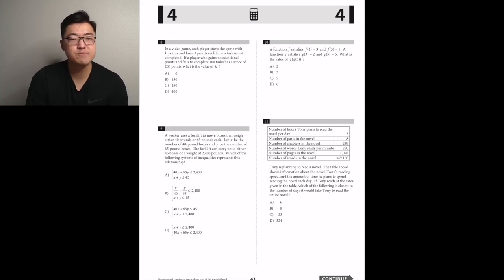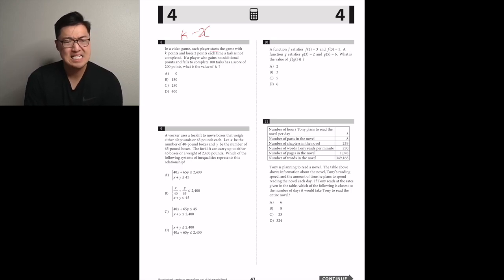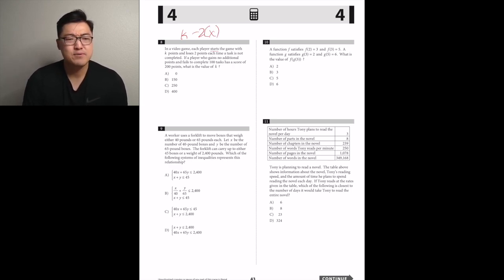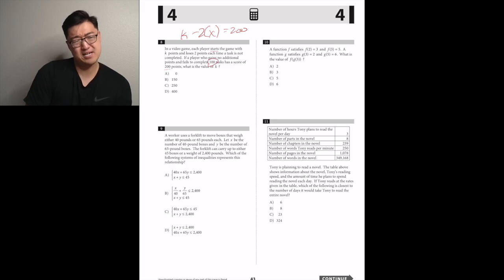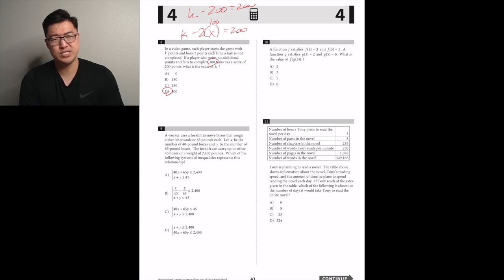In a video game, each player starts with k points and loses 2 points each time a task is not completed. A player who gains no additional points and fails 100 tasks has a score of 200 points. He went minus 200 and still had 200, so k is 400. D.